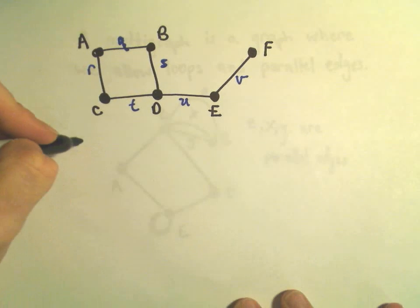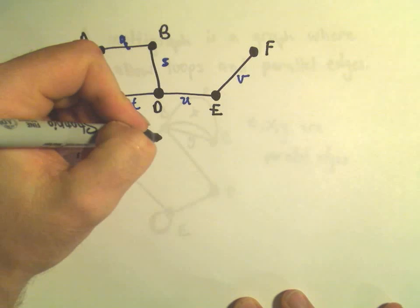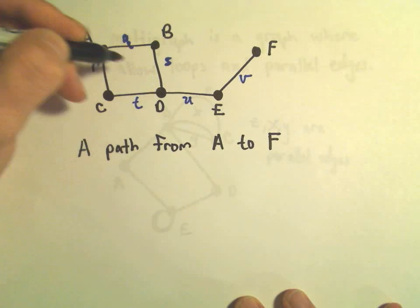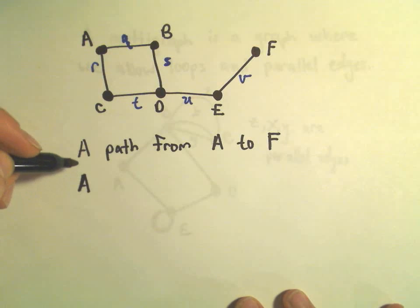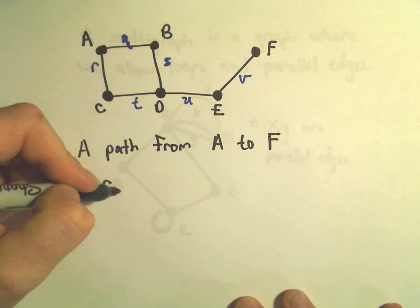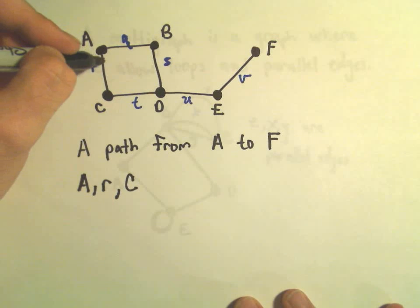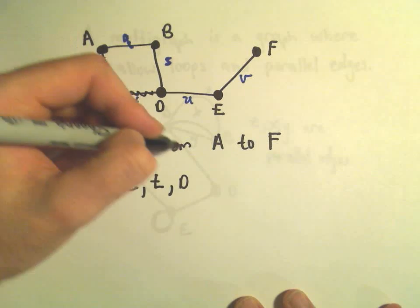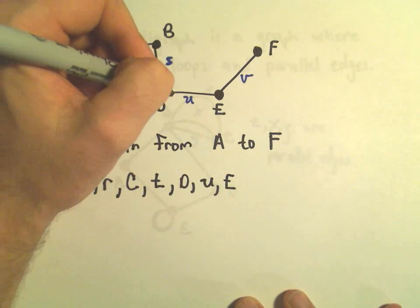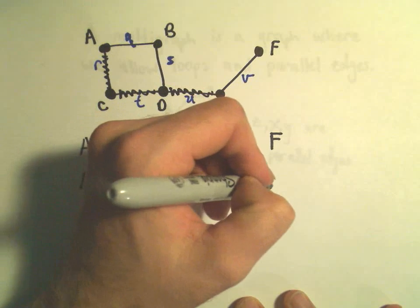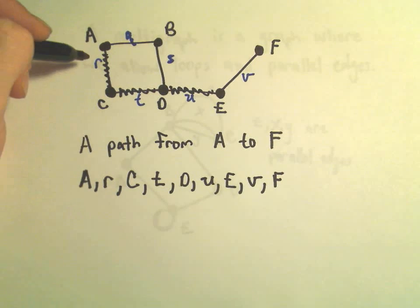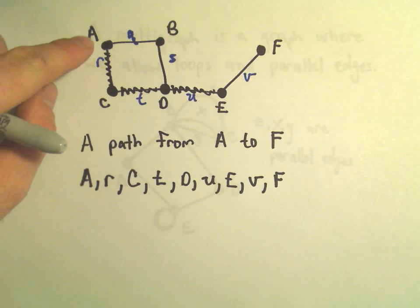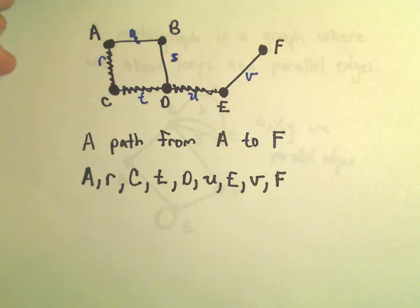Let's talk about the notion of a path. So, we could say a path from A to F. I always just thought, hey, if these are like cities, and maybe these are streets. So we start at city A, and I'm going to walk along edge R and end up in city C. Then I'll take the street T over to city D, and then I'll go from U to E, along U to E, and then along edge V to F. Certainly you could have only listed the edges R, T, U, and V, or you could have listed the vertices A, C, D, E, and F.